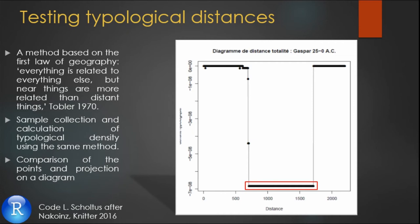Thus, the points on the same line have the same typological density, and therefore, they have the same typological assemblage and belong to the same material culture.